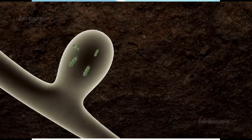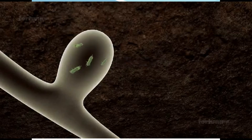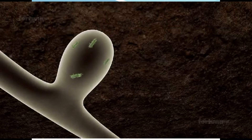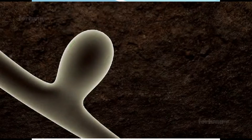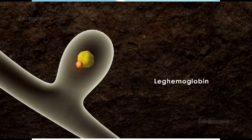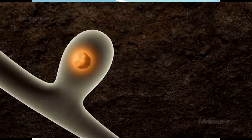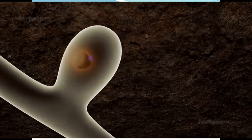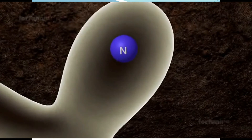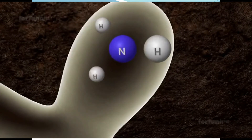The bacteria benefits from the plant by obtaining energy from carbohydrates produced by the plant. In return, the bacteria convert free nitrogen from the air and soil into a form that the plant can absorb. So the plant receives the fixed nitrogen from the nodules and produces food and forage protein.